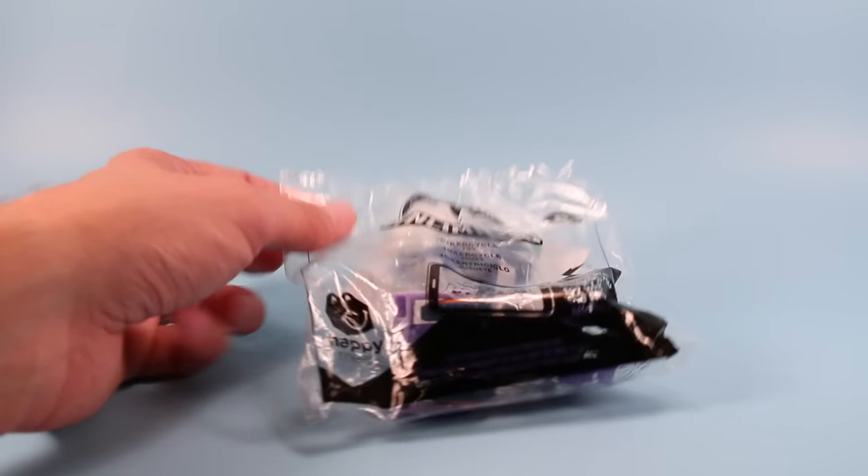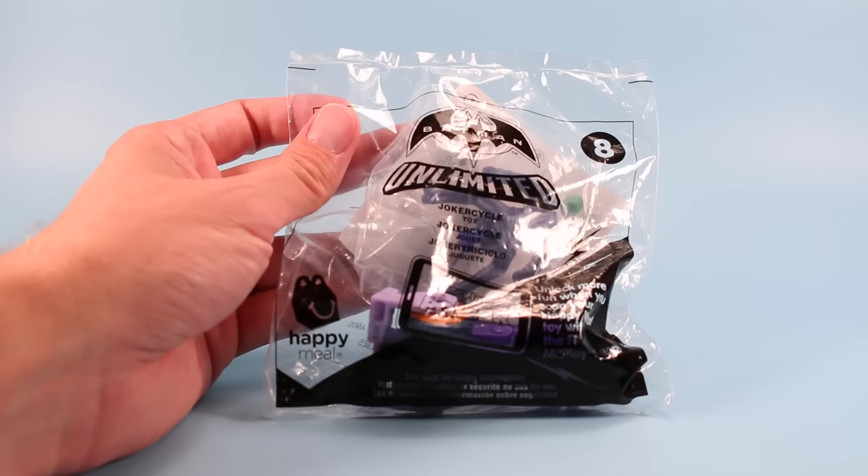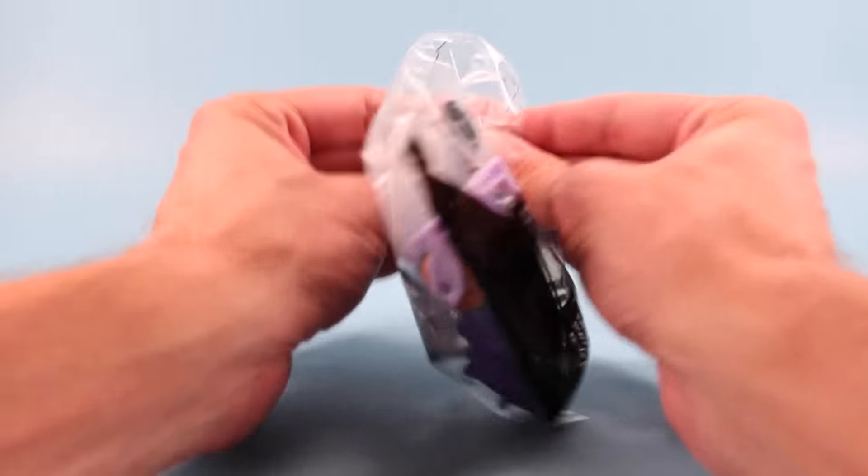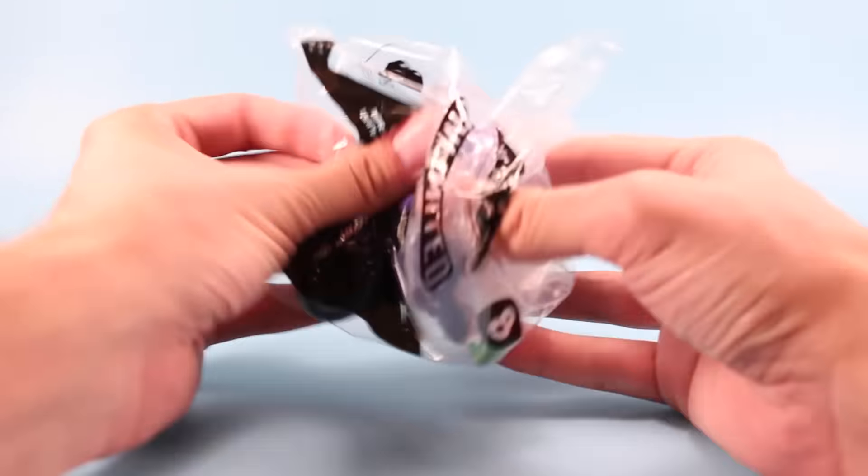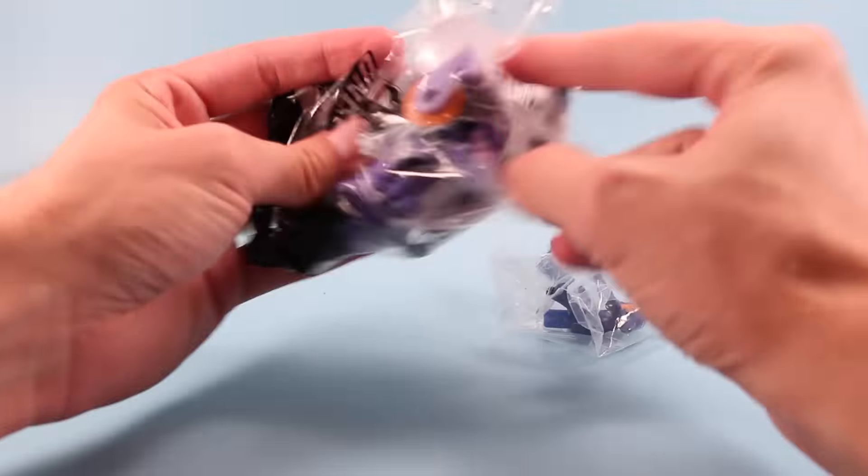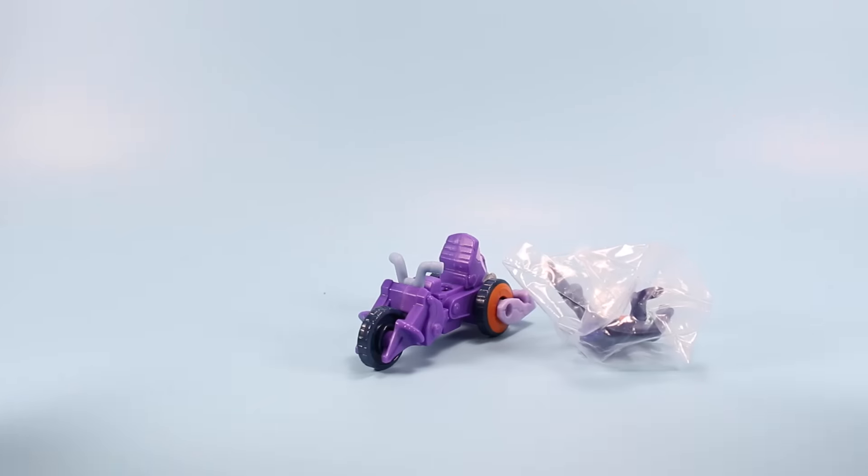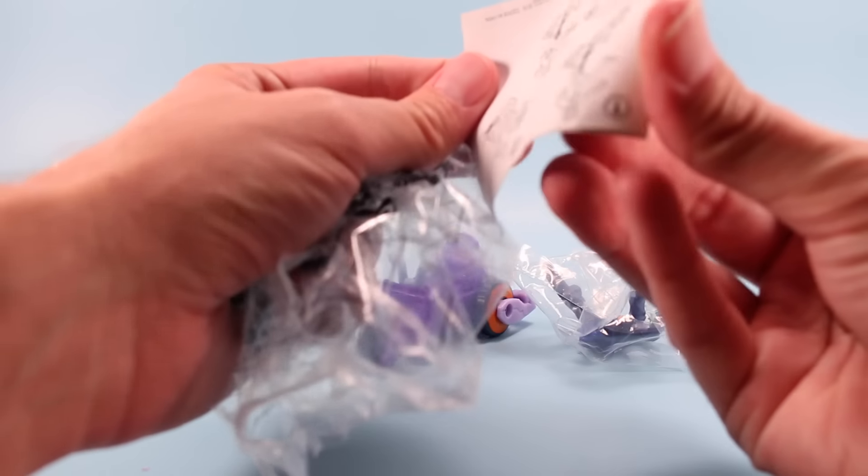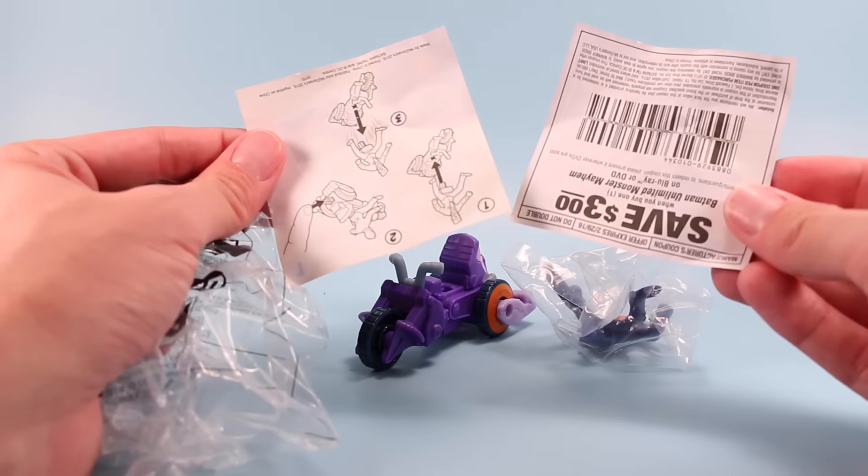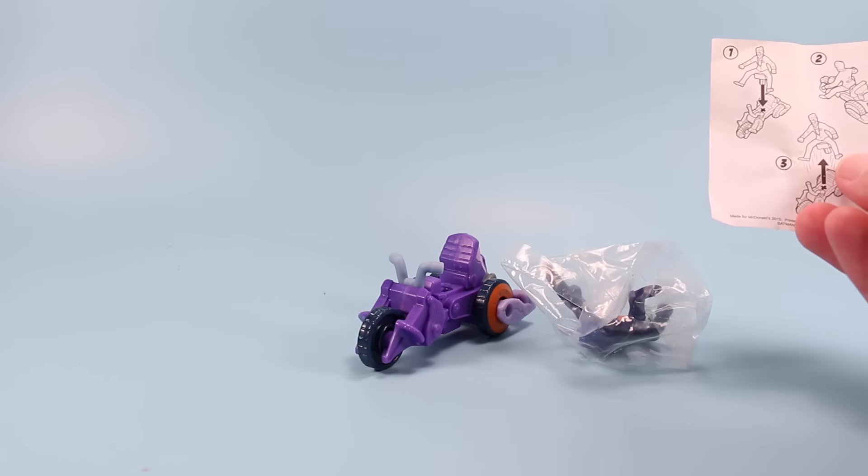And finally, finishing off with the number eight toy, the Joker Cycle. So we've got several vehicles and several figures. This one, right away, is looking pretty intricate. I'm excited for that. Instructions. And $3 off. You didn't see that coming. All right. How do we build this guy? Well, we're going to sit Joker onto his Cycle. We're going to press this button in the back.